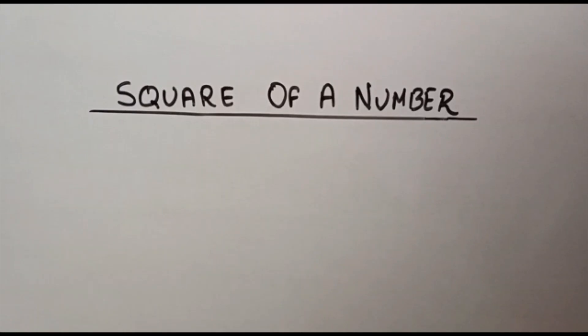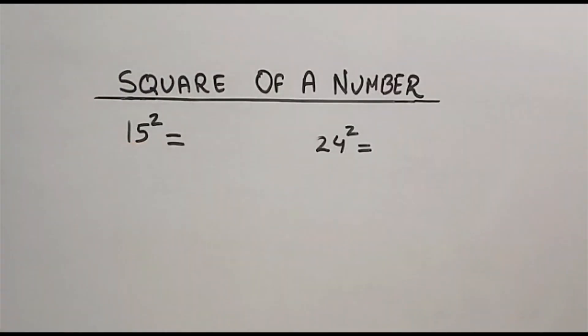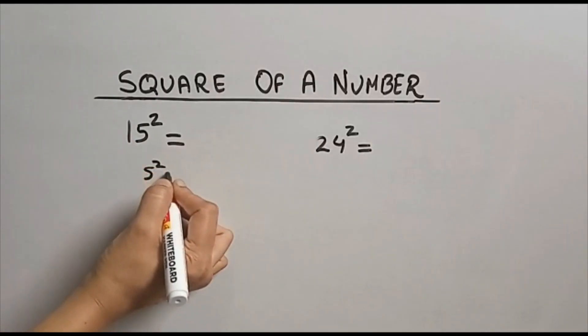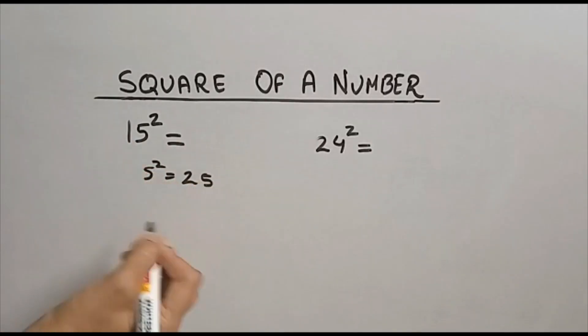Hey friends, welcome back to my channel. Today we are going to see how to find square of a number in seconds. Square of 15: first we will take square of this unit place, 5² is 25.